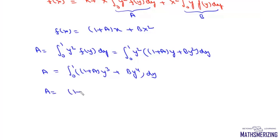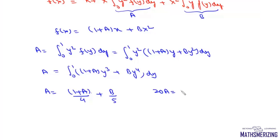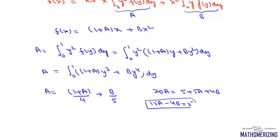Integrating, a equals [y³/3 + a·y⁴/4 + b·y⁵/5] from 0 to 1, giving a = 1/3 + a/4 + b/5. Multiplying through by 20: 20a = 20/3 + 5a + 4b, which simplifies to the first linear equation: 15a − 4b = 5.